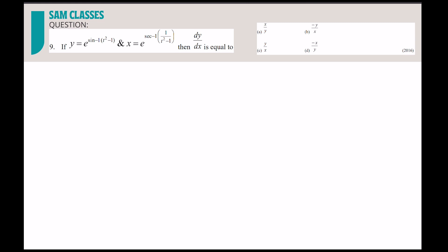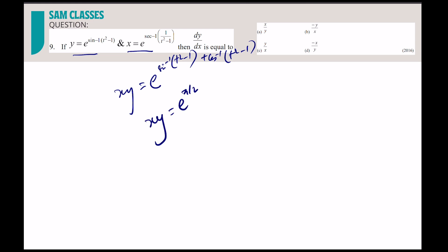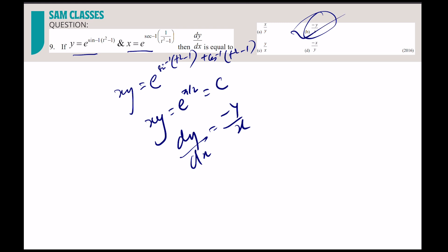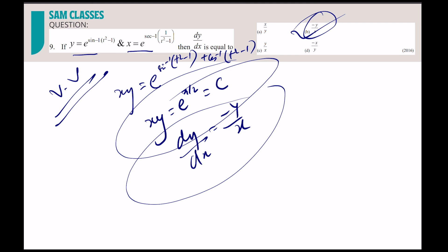Here is a very important concept: whenever you multiply x and y and get a constant — for example, xy = e^(π/2) because sin⁻¹x + cos⁻¹x = π/2 — then whenever the product of x and y is a constant, directly write dy/dx = −y/x. Many questions come based on this, directly or indirectly. Memorize this: xy = constant ⟹ dy/dx = −y/x.